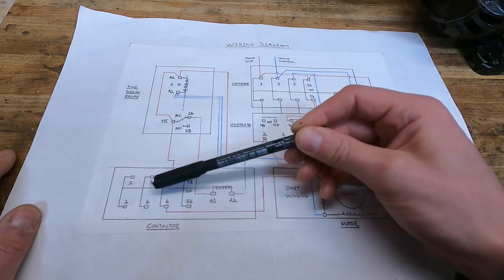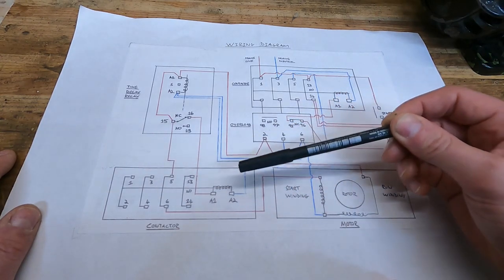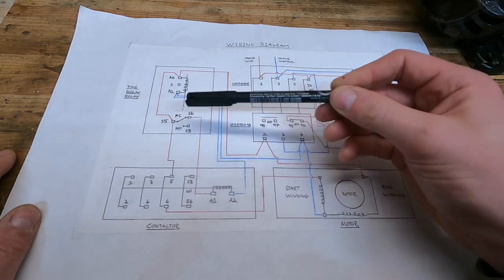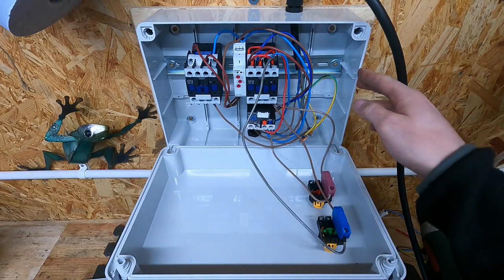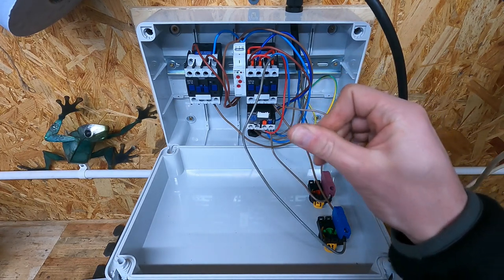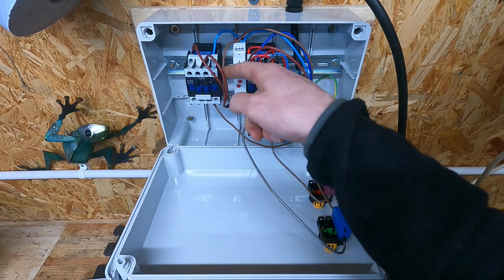This is the completed starter cabinet. I had to get a bigger enclosure because the other one that I had was too small to fit in the second contactor. I also got a normally closed and a normally open switch for the start and stop buttons, which I've mounted to the front of the enclosure.